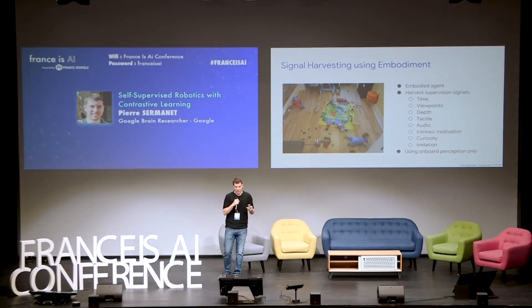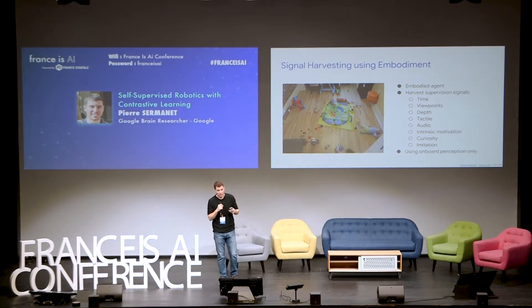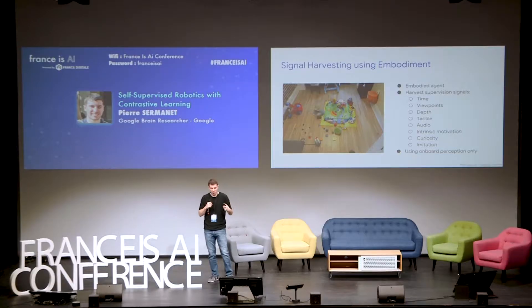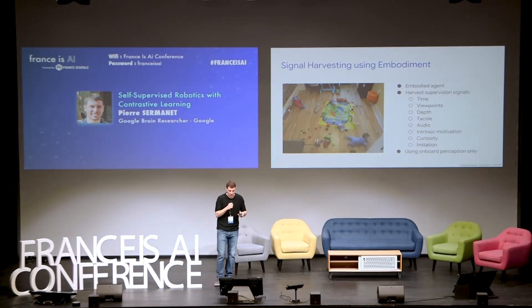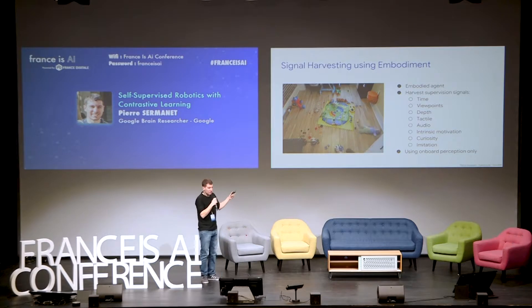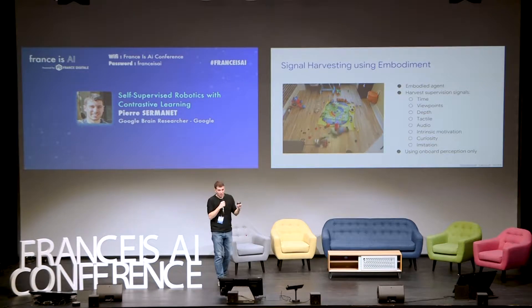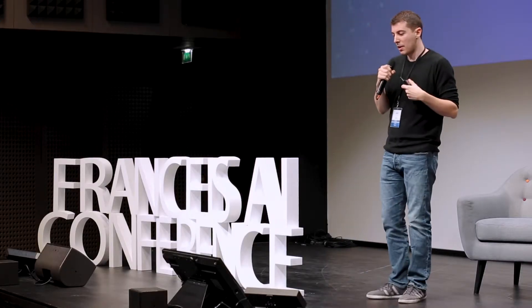You can think of a self-supervised robot as one that is going to teach itself about the world by interacting with it without direct supervision. Not only are there many signals in the world that you can use to self-teach, but also having embodiment is maybe the only way to learn something. So to reach AGI, maybe using robots might be the only way. Some of the signals you can harvest when you have an embodied agent are time, viewpoints, depth, tactile and audio feedback, intrinsic motivation, curiosity, and imitation — and all of these signals can be captured using onboard perception only.